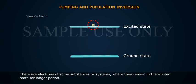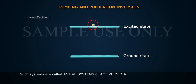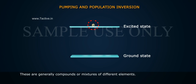There are electrons of some substances or systems where they remain in the excited state for longer period. Such systems are called active systems or active media. These are generally compounds or mixtures of different elements.